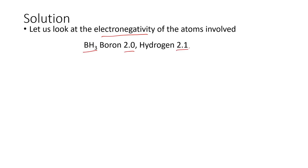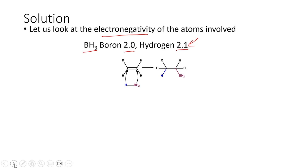In borane, the negative part is basically the hydrogen atom. When we look at BH3, we can break it into H–BH2. In that case, the negative part of the addend — according to Markovnikov rule — attaches itself to the most substituted carbon atom.